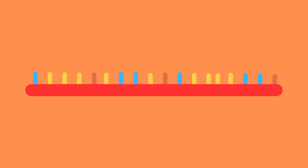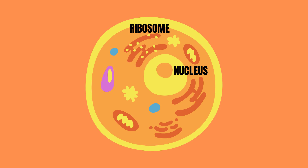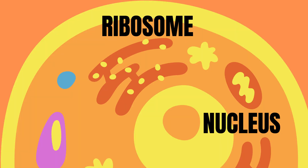Now the created mRNA carries with it the original DNA code of the gene but in RNA form. This is why it is called messenger RNA. The mRNA will then be processed during RNA processing and leave the nucleus of the cell and find a ribosome, where it will be translated into amino acids.